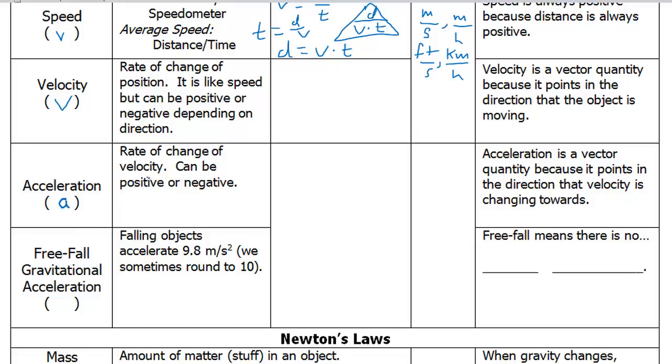Acceleration, we can use A, defined as the rate of change of velocity. It can be positive or negative. Generally speaking, we think of positive as getting faster, negative as getting slower. The equation for this is acceleration equals the change in velocity, V final minus V initial, over the time interval for that change.